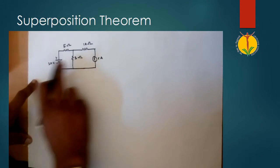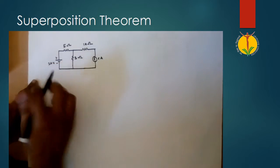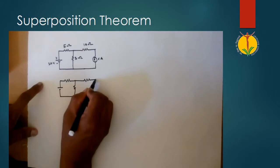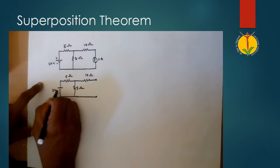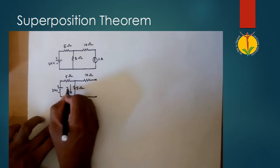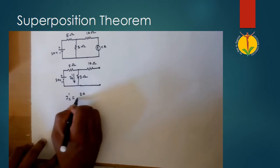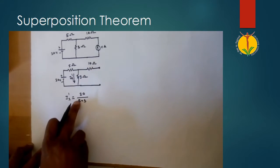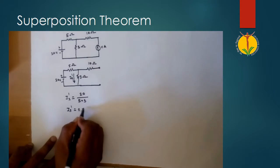In the first case, we activate the 20 volt voltage source and deactivate the 5 ampere current source. Let us redraw this circuit with only the 20 volt voltage source active. The current flowing through the 3 ohm resistor due to the 20 volt source, denoted I3', equals 20 divided by 5 plus 3. Since there is only one voltage source and one loop, we apply Ohm's law. So I3' is equal to 2.5 amperes.